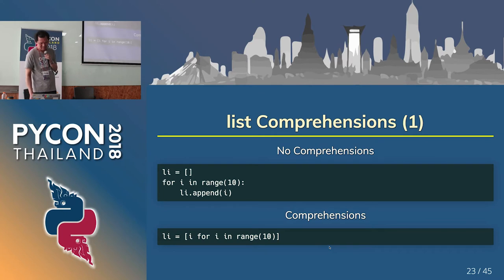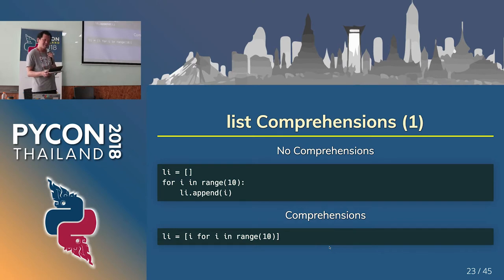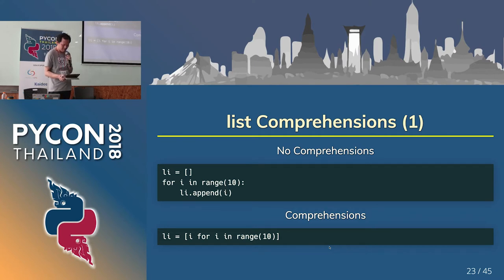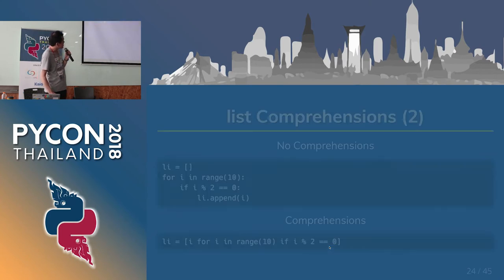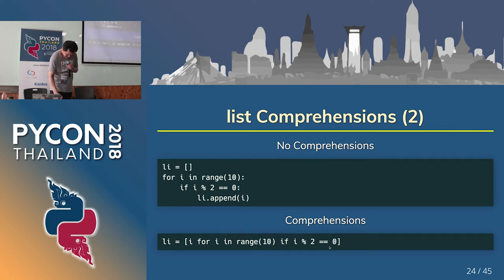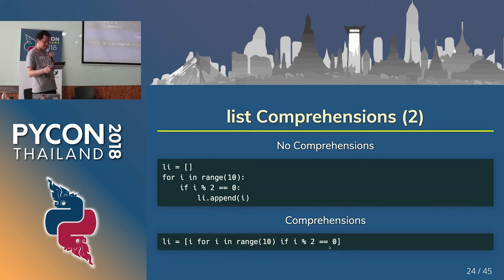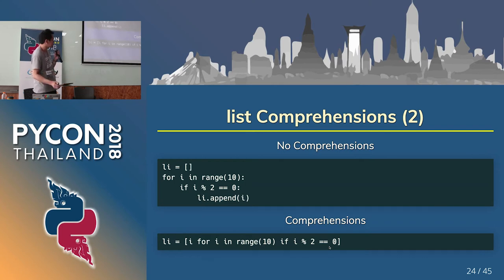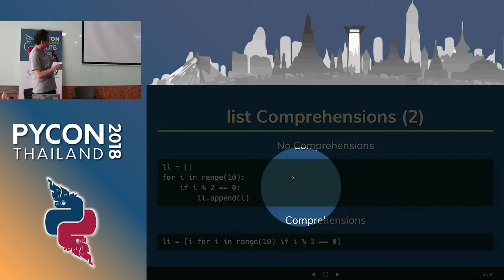Next, list comprehensions. I like list comprehensions. This is the simple type. This next example includes conditions — an if statement — which returns even numbers only. The top style and bottom style have the same meaning.